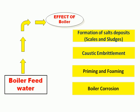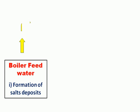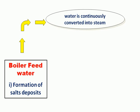In case water contains hardness, turbidity, oil and grease, impurities, and dissolved salt, these four types of disadvantages occur. We are discussing them one by one. First, formation of salt deposit. When boiler feed water contains hardness and dissolved salt impurity, as water is continuously converted into water vapor (steam), the dissolved salts in soluble form reach the saturation point and get deposited as salt deposits.